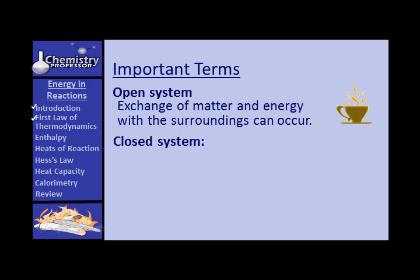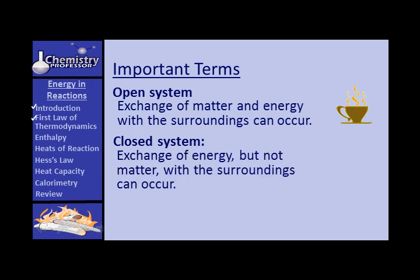In a closed system, you can have an exchange of energy but not matter with the surroundings. For example, a hot plate gives off energy to the surroundings but does not give off any matter. If it is giving off matter, you'd better get your hot plate checked.